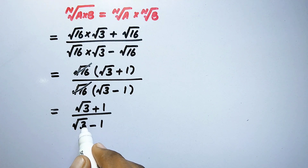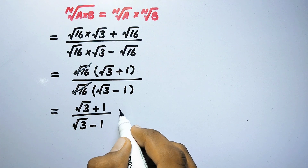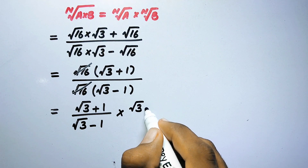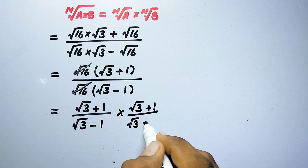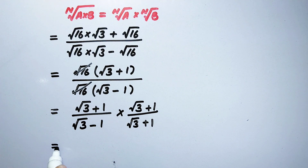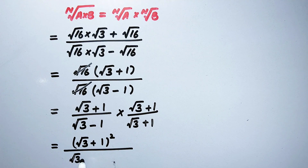We will further simplify by using the method of rationalization. We multiply both numerator and denominator by square root of 3 plus 1. So the numerator becomes (square root of 3 plus 1) whole square, and the denominator becomes (square root of 3 plus 1) times (square root of 3 minus 1).